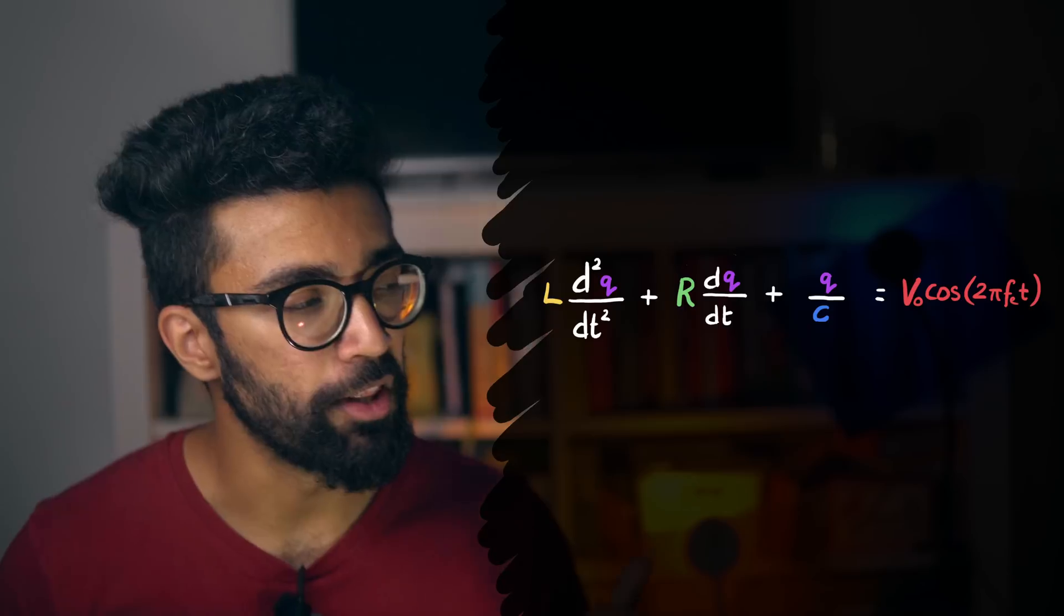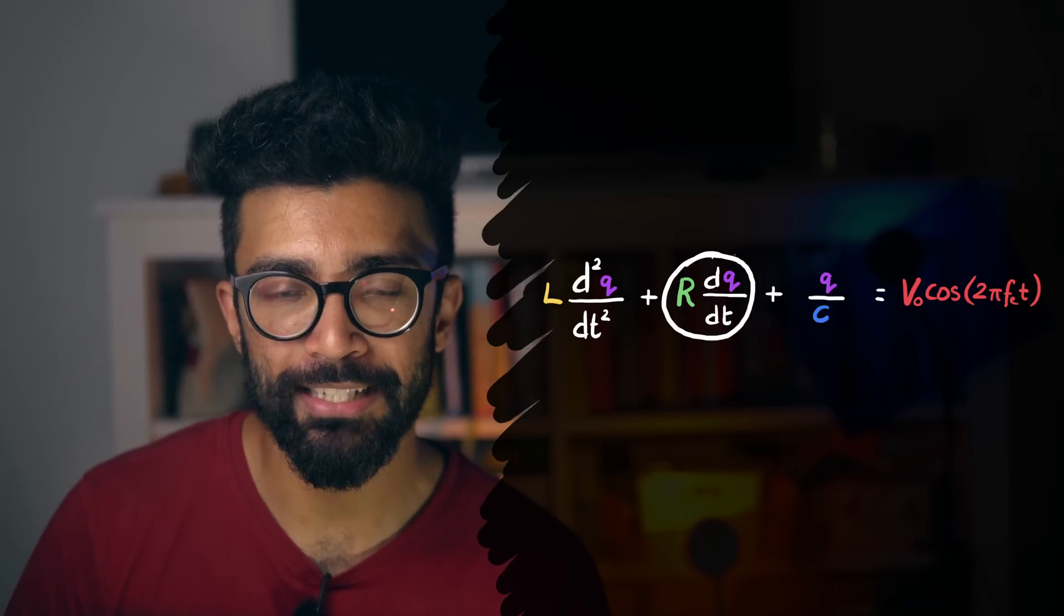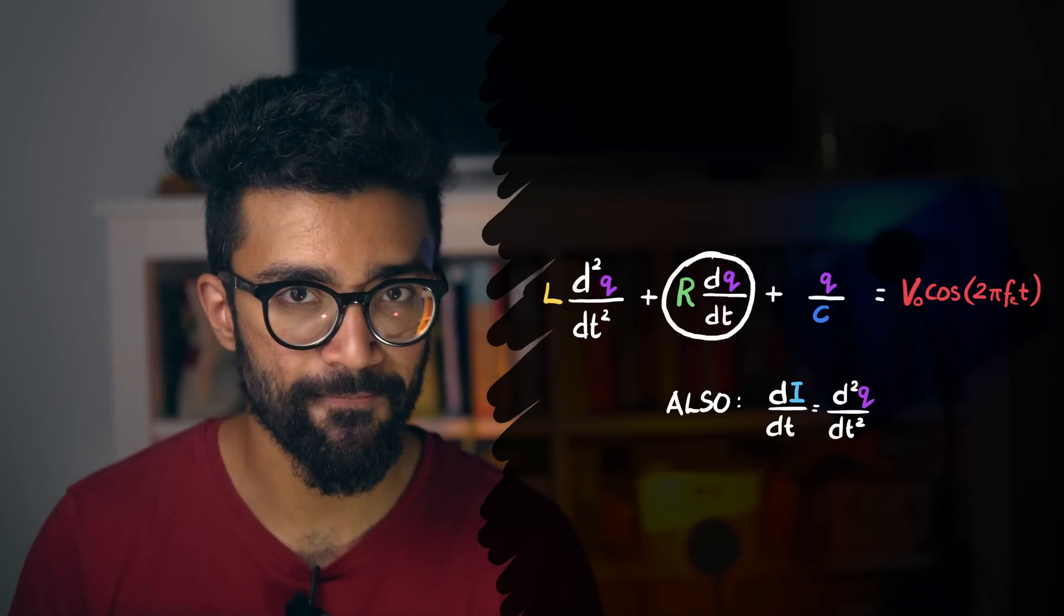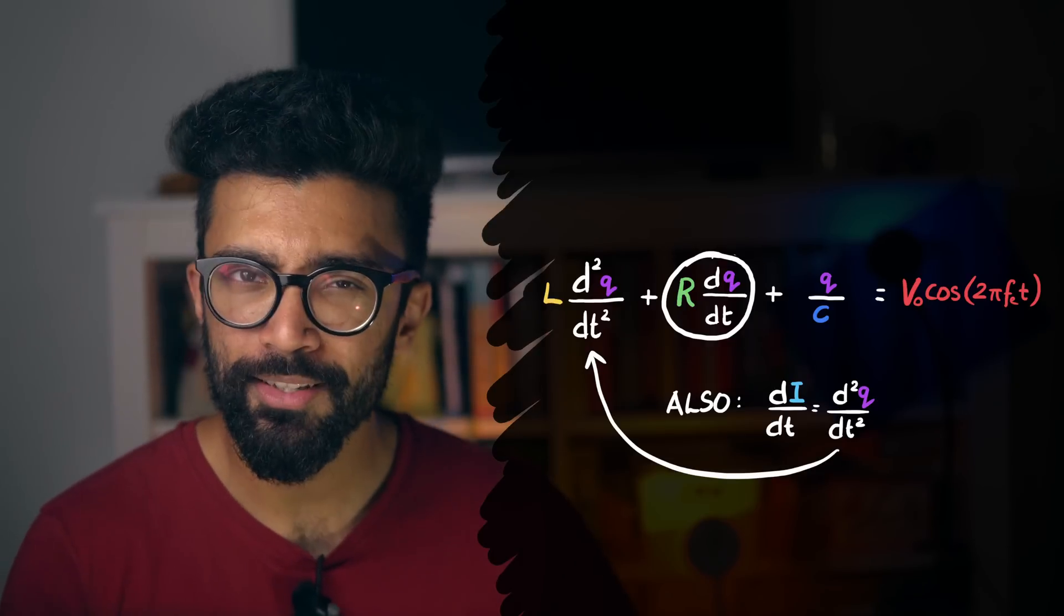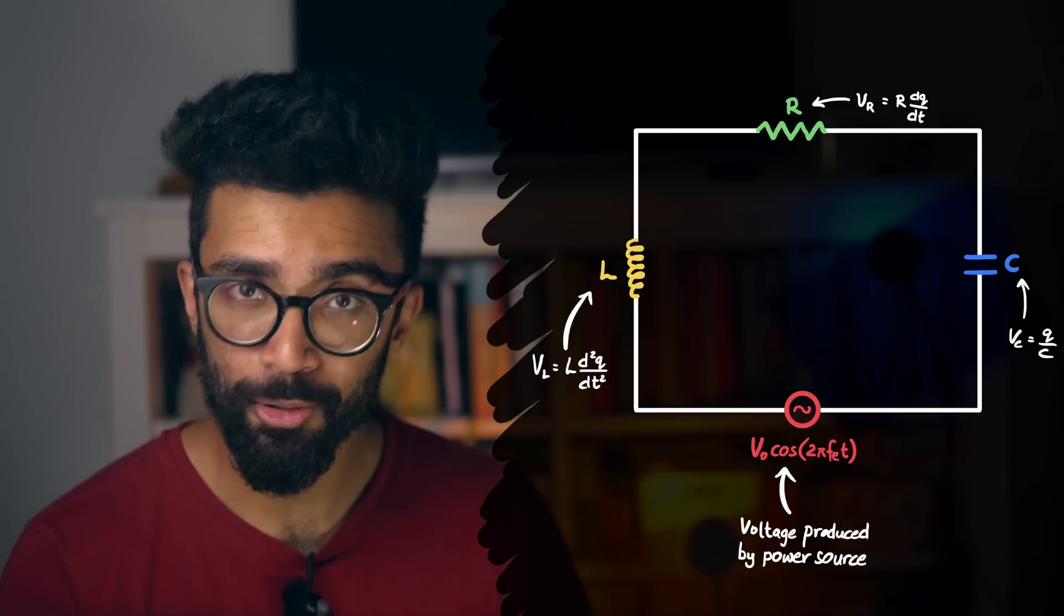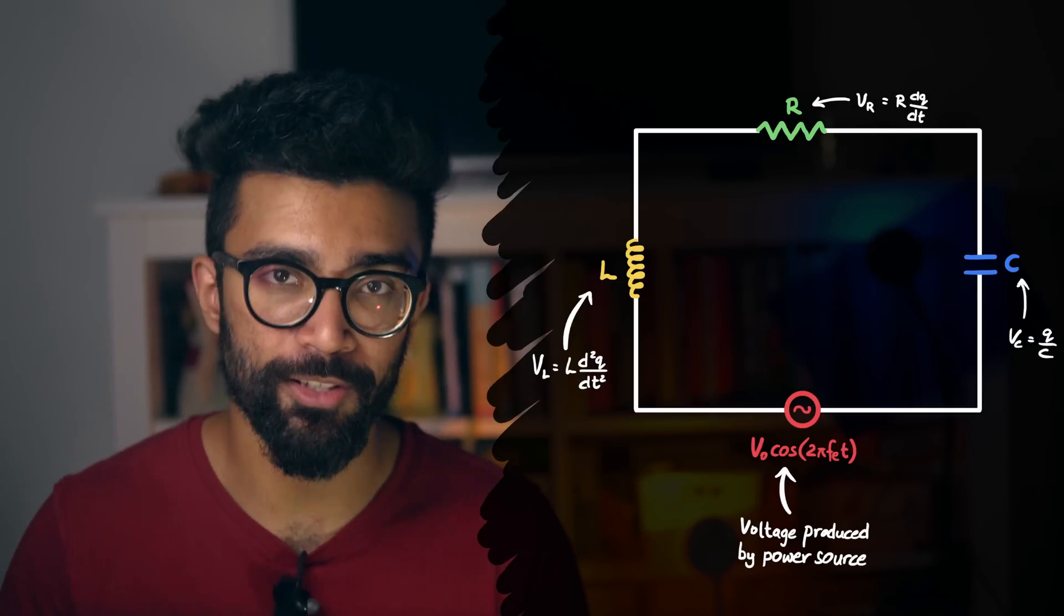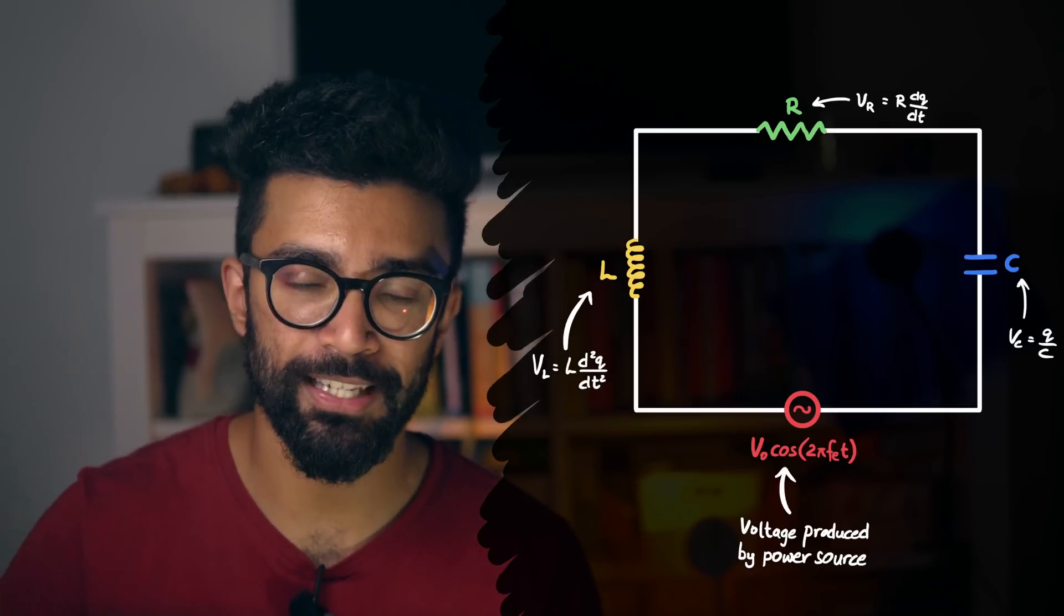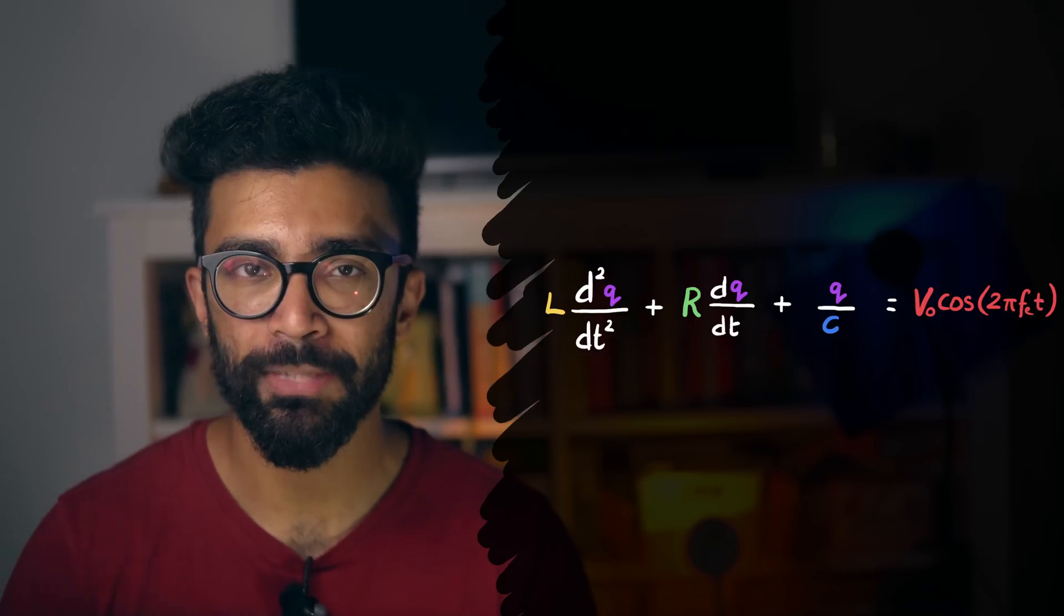That looks a bit like this term in our equation. And on top of this, we can also calculate how quickly the current changes with time in a circuit. This bit looks a little bit like this term in our equation. So what is this equation actually studying? Well, it's essentially looking at the voltage, or potential difference across different parts of our circuit. If you're not familiar with what voltage is, then I'll leave some resources in the description box below. So let's now look at each term in our equation in detail.